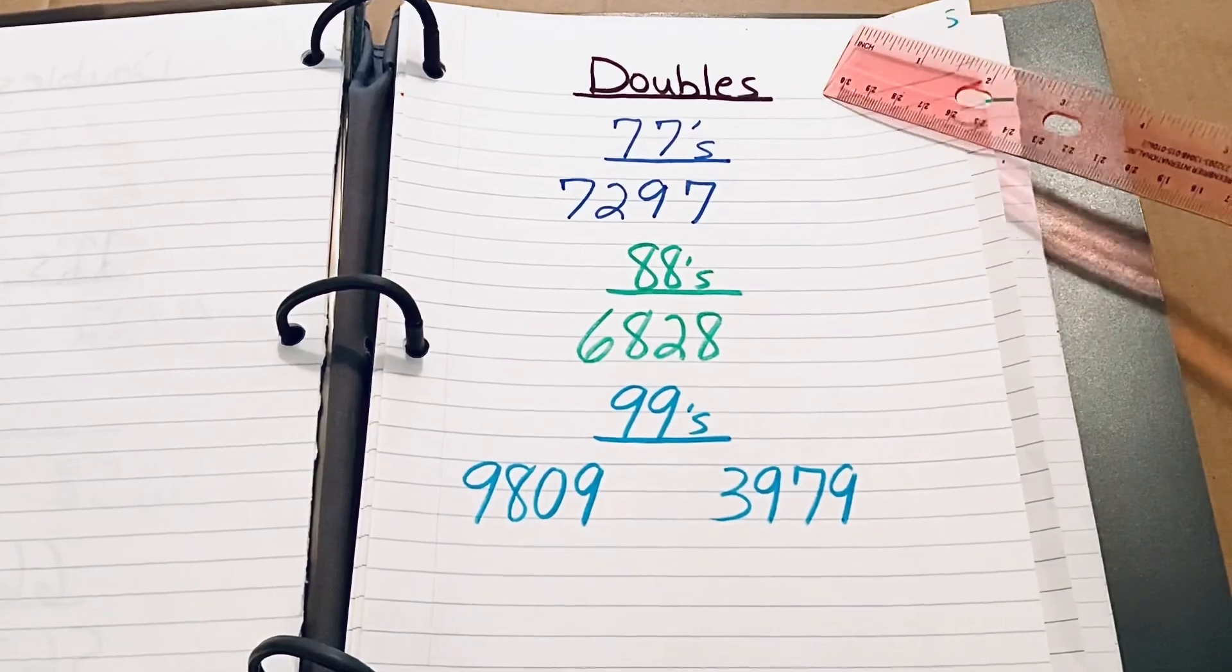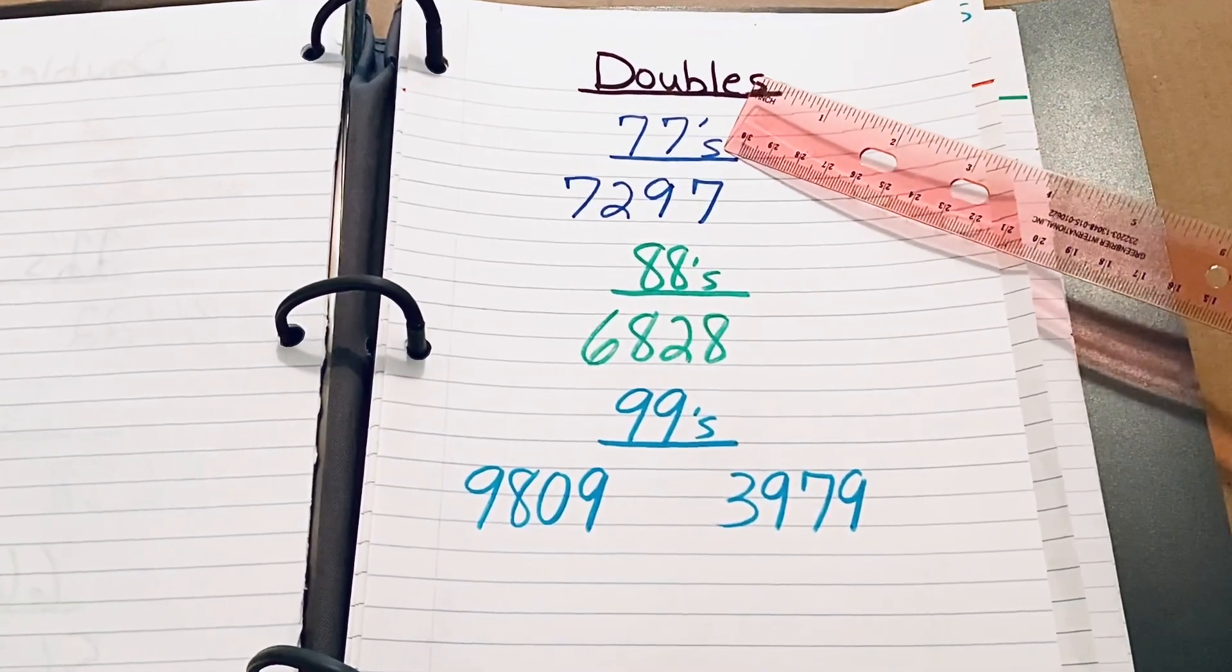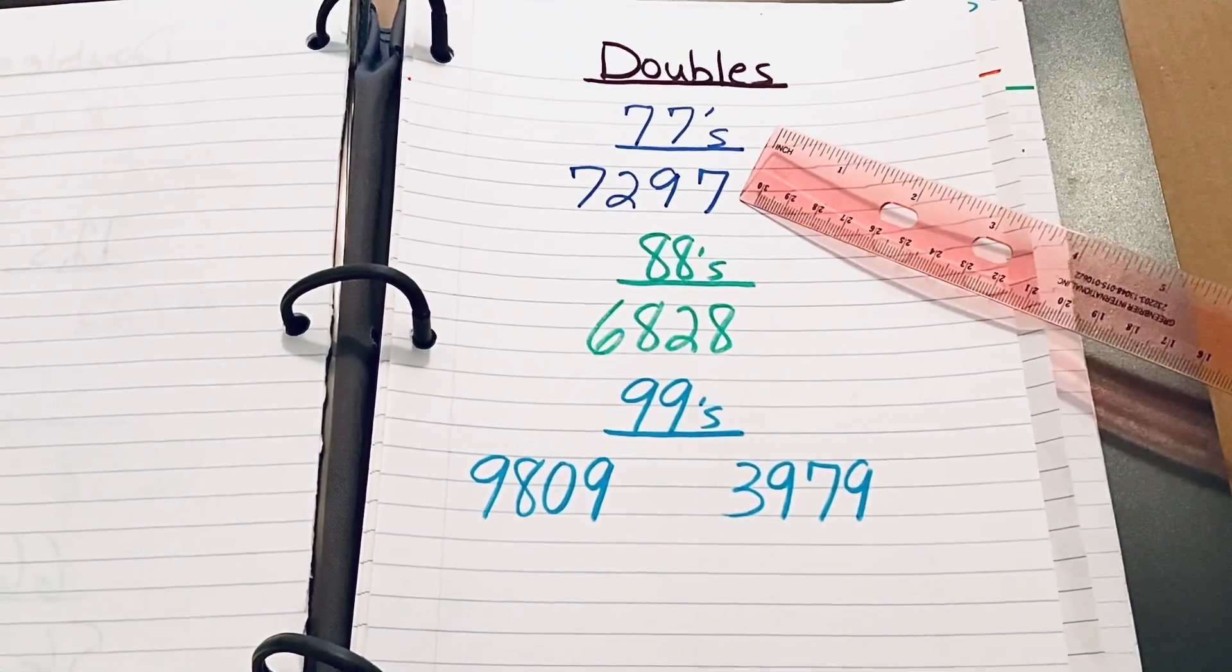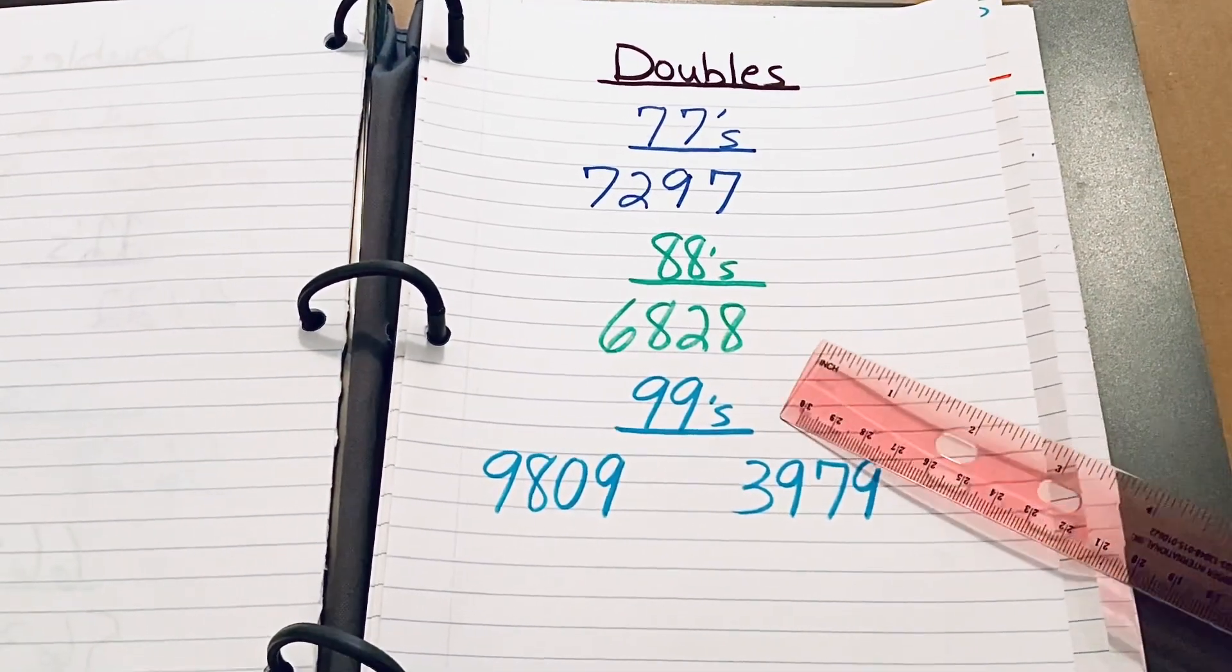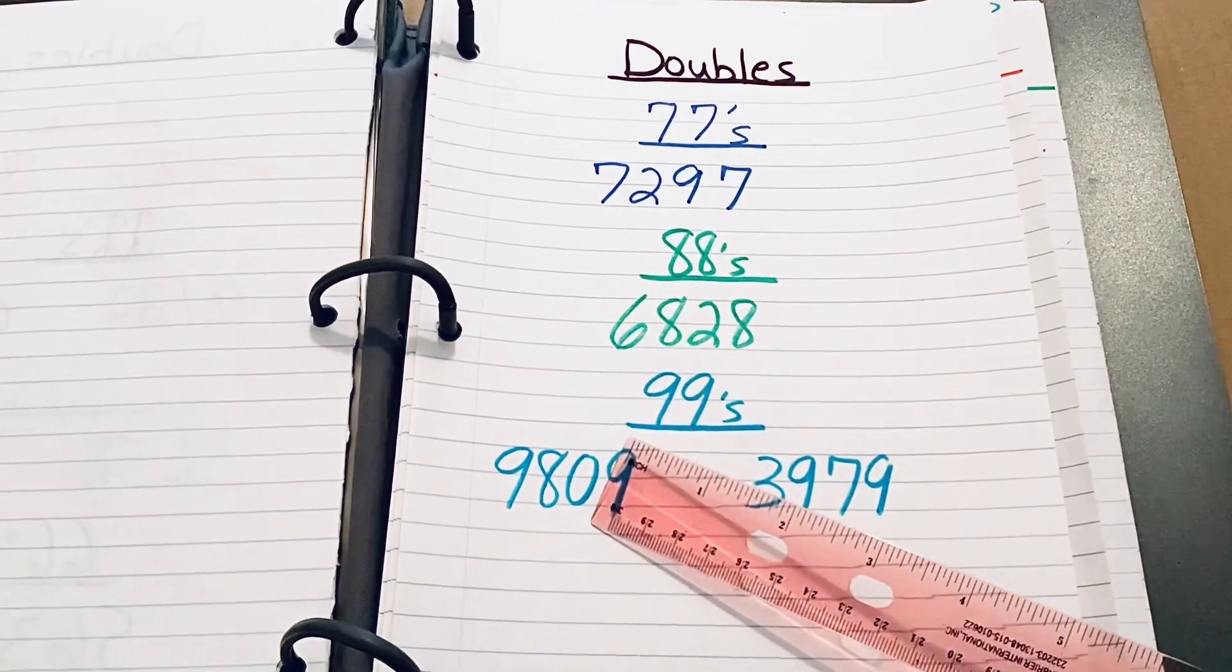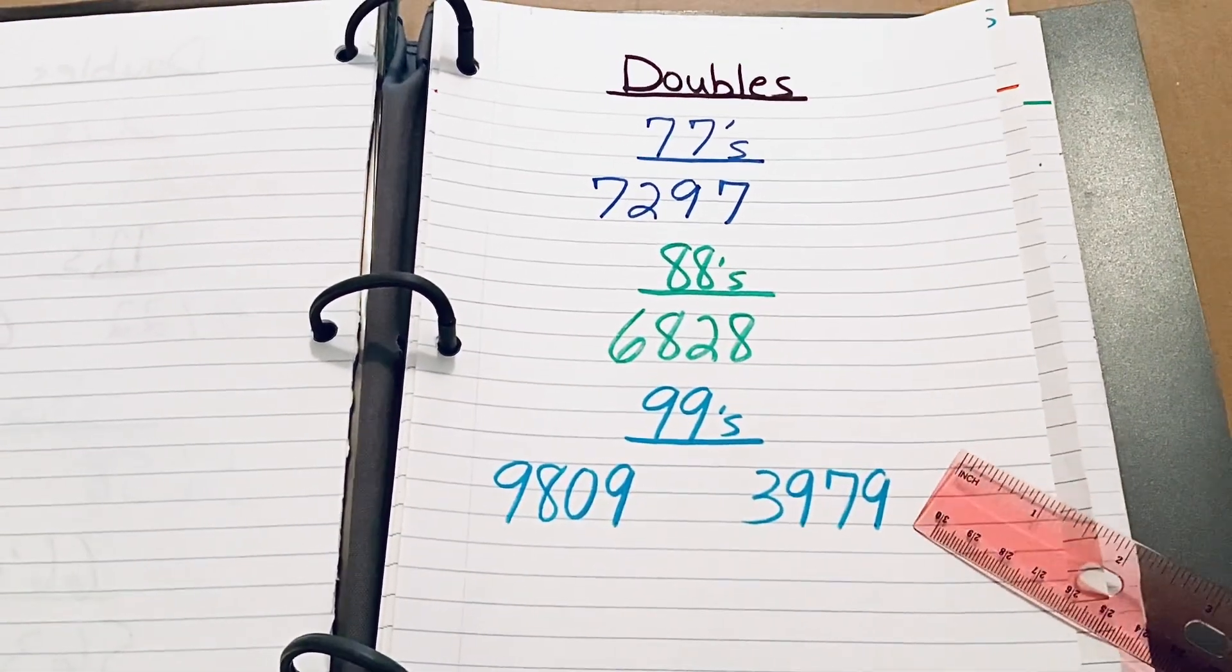Next group of double numbers, the 77s, 7297. The 88s, number is 6828. And the 99s, there's two numbers here, 9809 and 3979.